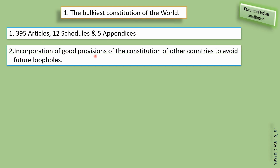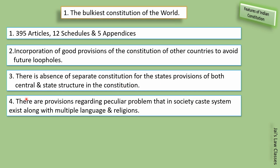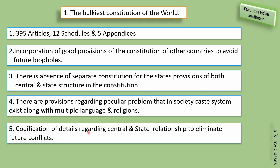Incorporation of good provisions from constitutions of other countries to avoid future loopholes. There is absence of separate constitutions for states — provisions for both central and state structure are included. There are provisions regarding peculiar problems like the caste system, multiple languages, and religions. Codification of details regarding central and state relationships to eliminate future conflicts.